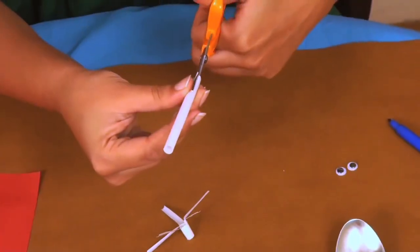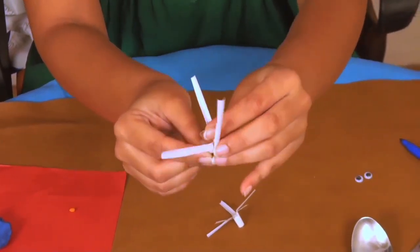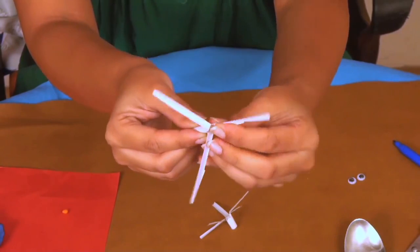Do the same with the other half of the straw. But this time, only cut three strips and spread them out. It kind of looks like helicopter blades.